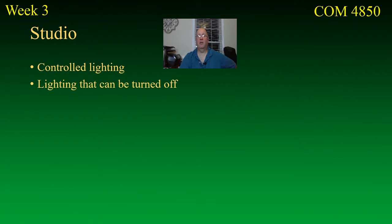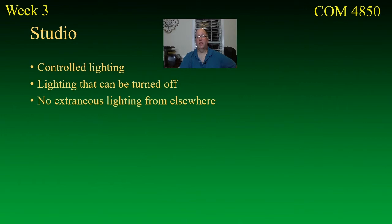In a studio, the lighting can be turned off — every single light in there is at your direction, and you can hit the switch and they're all gone. You can start with complete darkness and bring up one light at a time. You don't get any extraneous light from elsewhere. Typically a studio will not have windows, or if it does, the windows can be shuttered to create a nice dark environment.